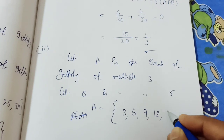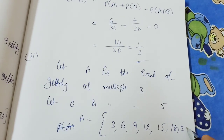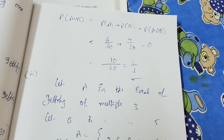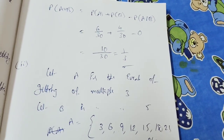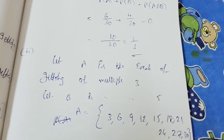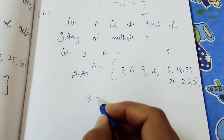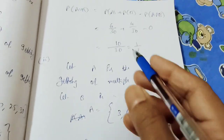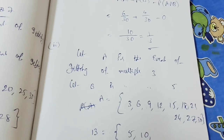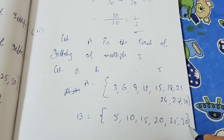Multiples of 3 up to 30: 3, 6, 9, 12, 15, 18, 21, 24, 27, 30 — that is 10 elements. Multiples of 5 up to 30: 5, 10, 15, 20, 25, 30 — that is 6 elements.